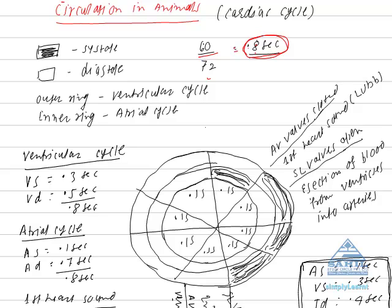This diagram represents the cardiac cycle. This is in fact a diagrammatic representation of the cardiac cycle. In this diagram we can see there are two rings: an outer ring and inner ring. The outer ring is the ventricular cycle, inner ring is the atrial cycle.